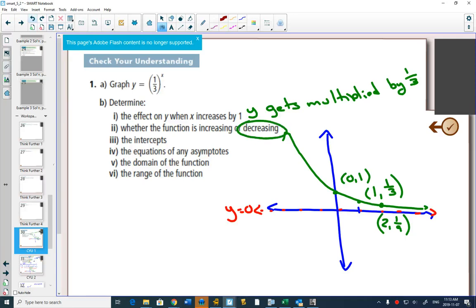There are no x-intercepts ever on an exponential function, unless we start to move it up and down, which we will. But this one has no x-intercepts. And the y-intercept is at 1.